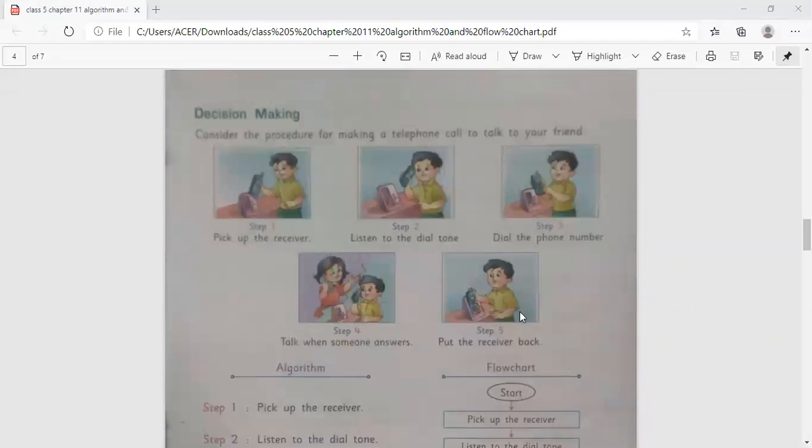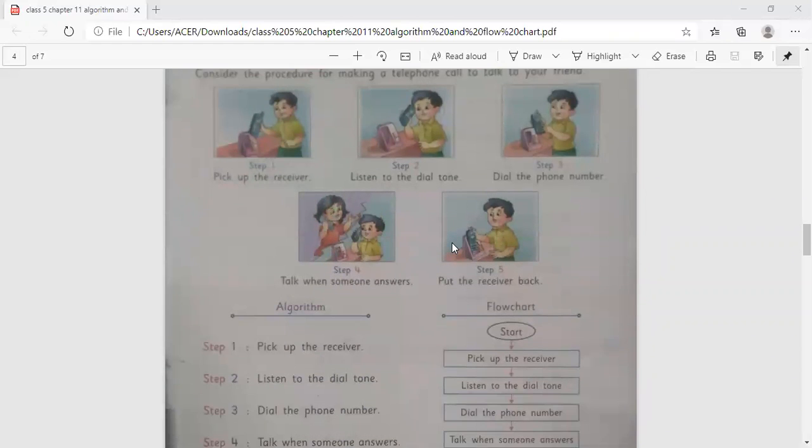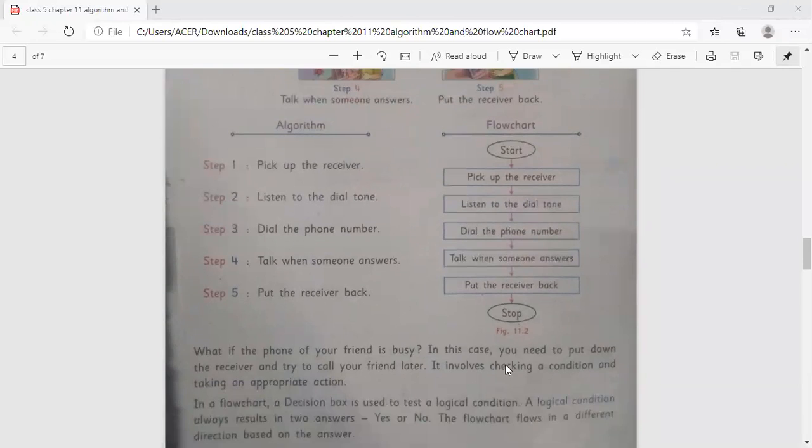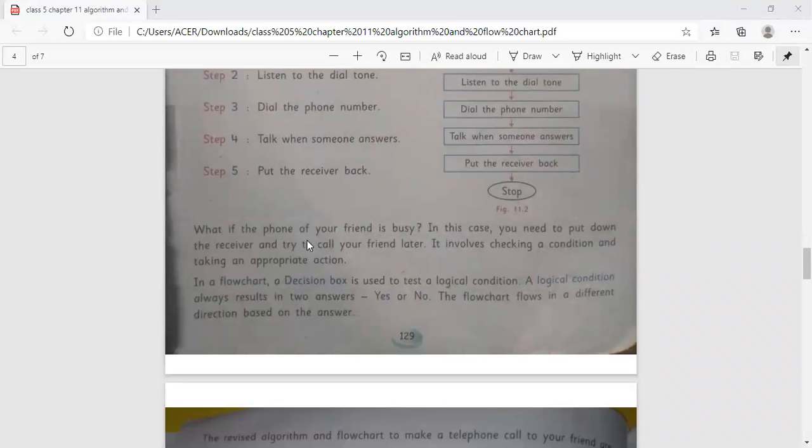One more example is there, that is decision making. Here also you have to try it yourself. First of all you have to write the algorithm. After that you have to draw a flowchart. What if the phone of your friend is busy? In this case you need to put down the receiver and try to call your friend later. It involves checking a condition and taking an appropriate action. In a flowchart, a decision box is used to test a logical condition. A logical condition always results in two answers: yes or no.